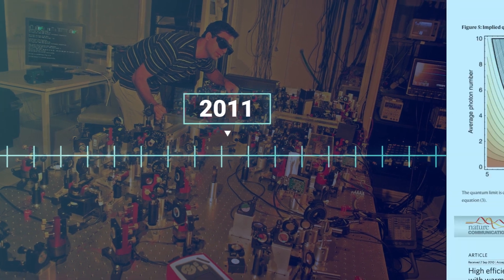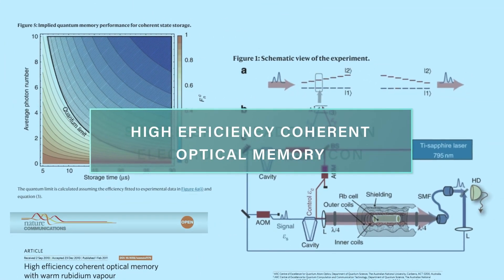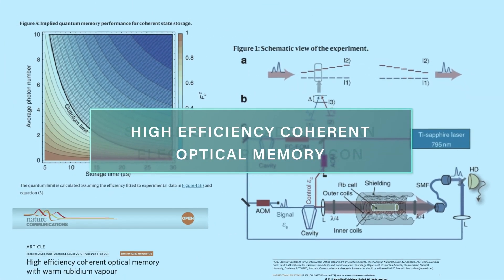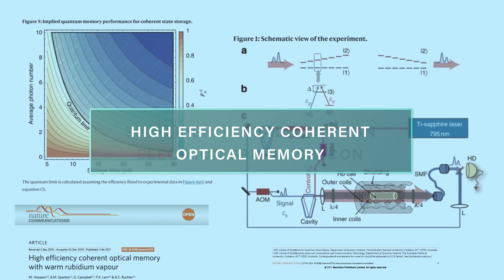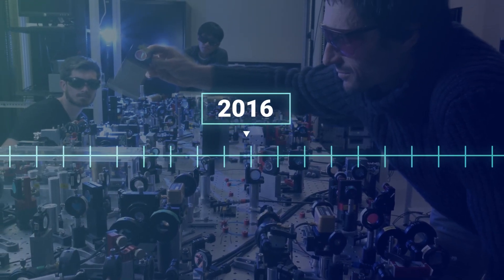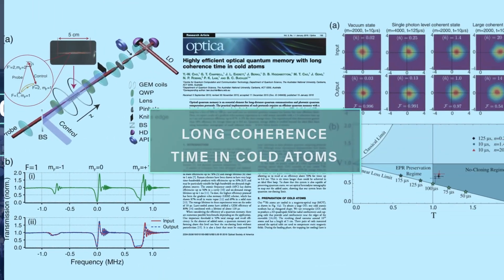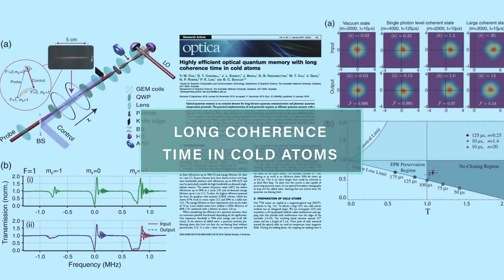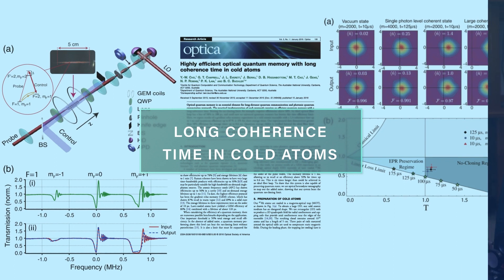In 2011 our atomic quantum memory experiment set a benchmark of 87% storage efficiency, a record that stood for nearly 10 years. We also demonstrated that our memory protocol is free from any added noise, meaning that it is compatible with quantum networks. We're able to show storage that beat the no cloning limit for times that exceeded the best possible storage in a fiber loop.